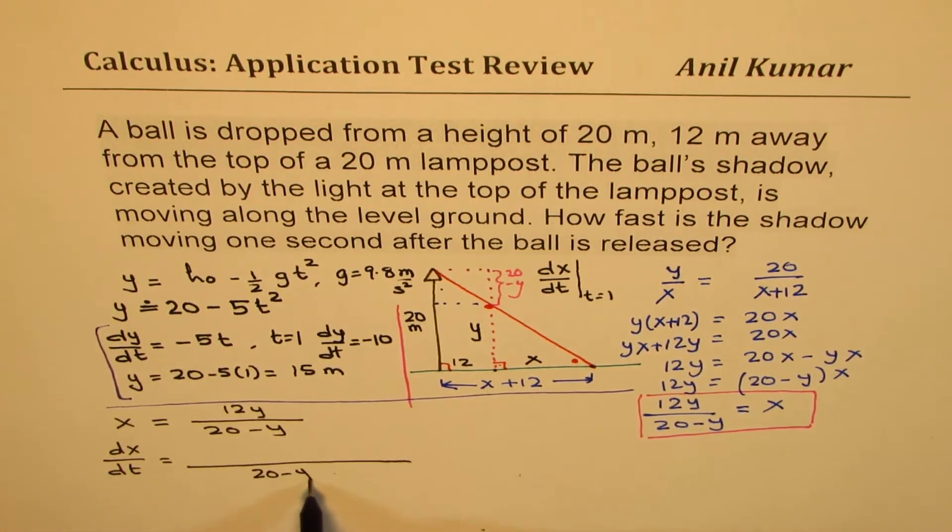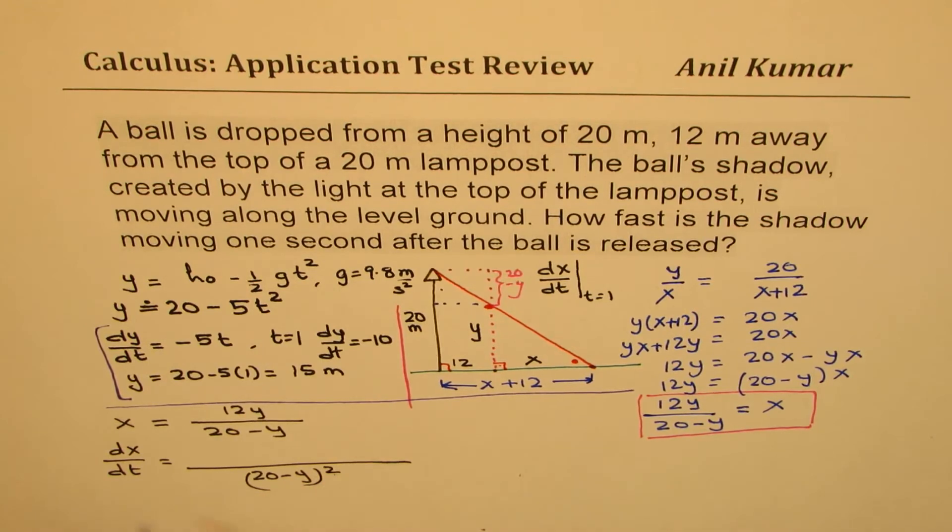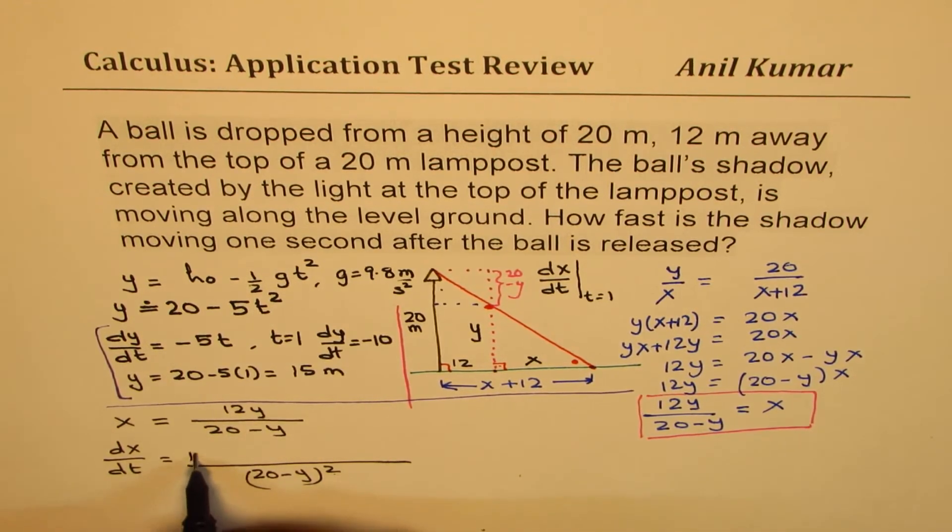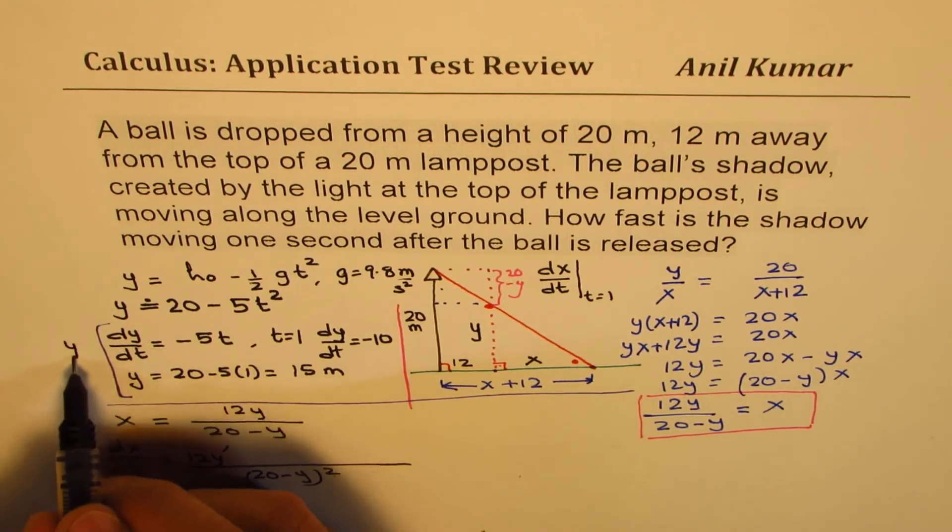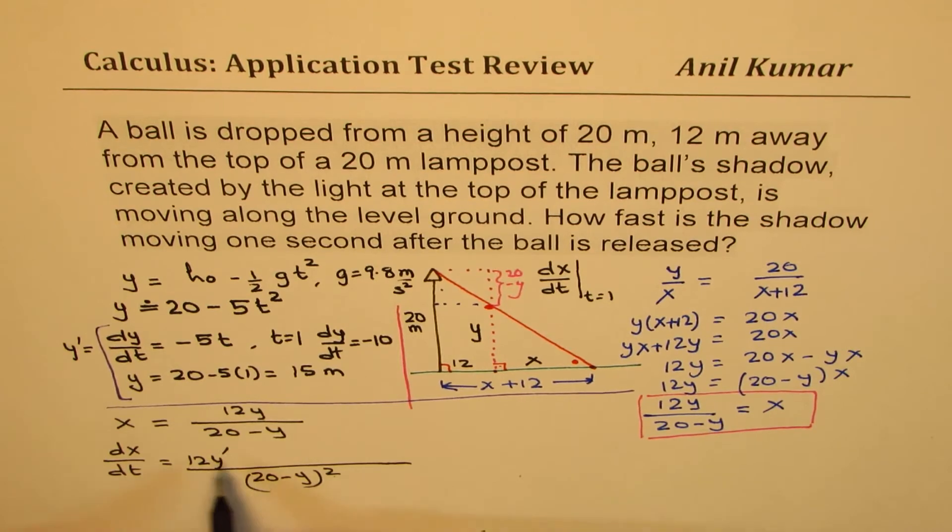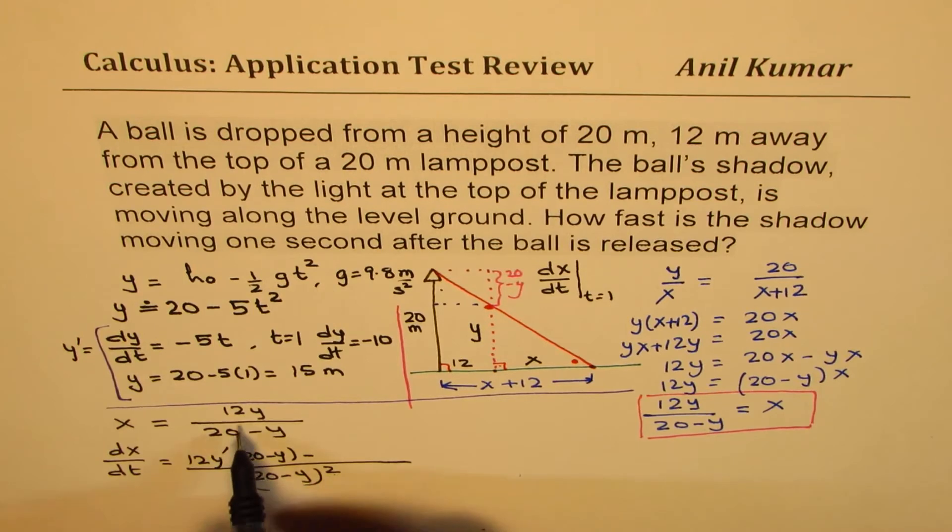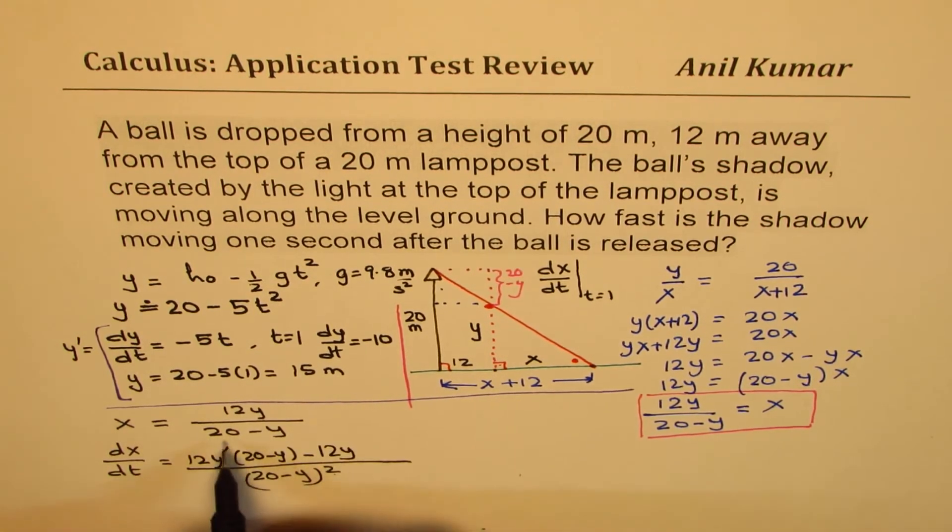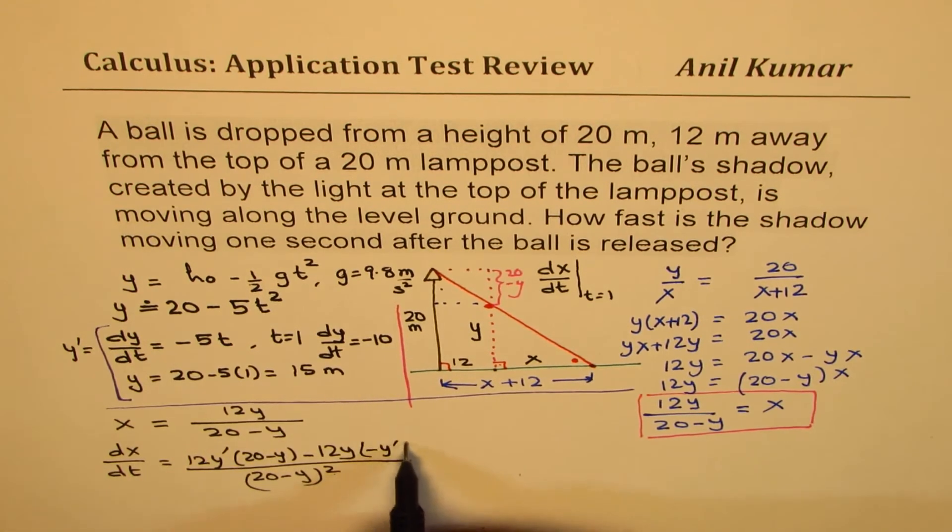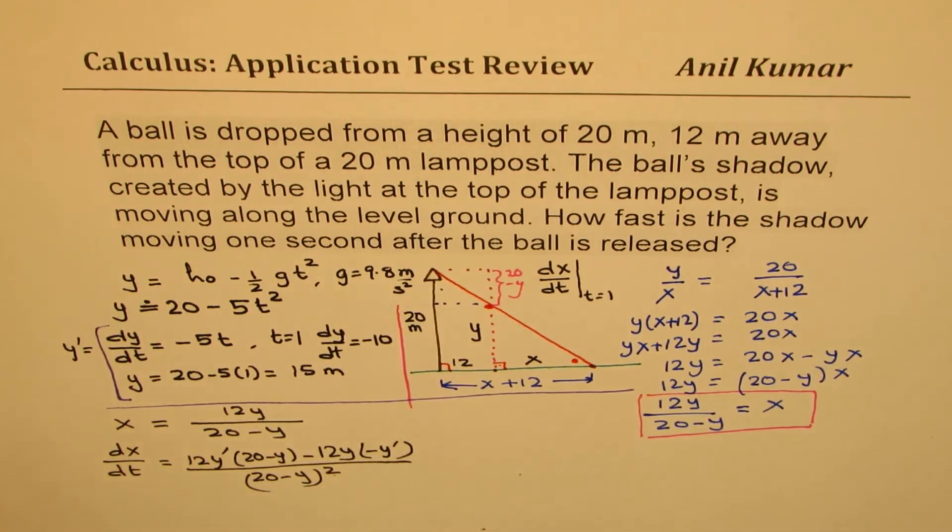So if you apply the quotient rule, you get (20 minus y) in the denominator squared. Derivative of 12y is 12. Let me write y prime for dy/dt. So 12y prime times (20 minus y) minus derivative of this times 12y. So 12y and derivative of this is minus y prime. That's what we get.